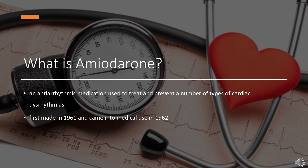Amiodarone was first made in 1961 and came into medical use in 1962 for chest pain believed to be related to the heart. It was pulled from the market in 1967 due to side effects. In 2020, it was the 198th most commonly prescribed medication in the United States, with more than 2 million prescriptions.